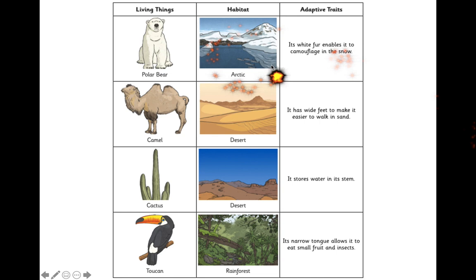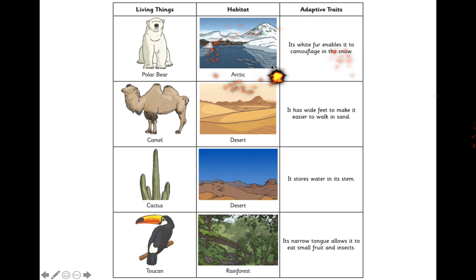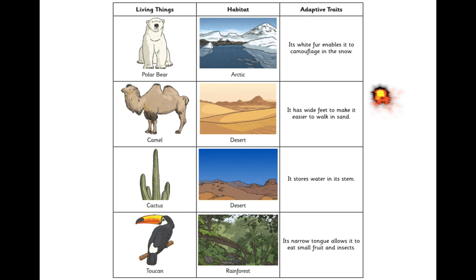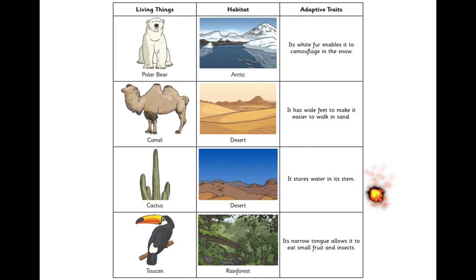Time to have a look at the answers. We've got a polar bear — the habitat it lives in is the Arctic, and the adaptive trait is its white fur enables it to camouflage in the snow. That's different to a brown bear, which would not camouflage in the snow. Then we've got a camel in the desert — it has wide feet that make it easier to walk in the sand, which is different to a horse that would struggle on sand in the desert.